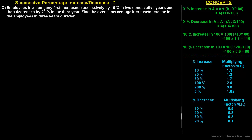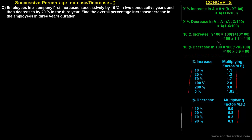Welcome to the class. In this class, we will extend our discussion of questions relating to successive percentage increase and decrease. In the previous class, we learned how to apply the concept of multiplying factors to solve these kinds of problems. For percentage increases, certain multiplying factors are applied, and similarly for percentage decreases. A multiplying factor is a factor which has to be multiplied with the initial value to get the final value after a certain percentage increase or decrease.